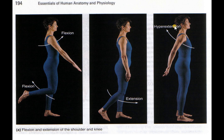Now I'm going to correct some of the things that are listed here. When you use the word hyperextension — this is going to be more from a sports medicine perspective — when a joint, like in this case the shoulder, goes backwards, that is extension. Once you start getting into hyperextension, you're now getting into tissue damage.